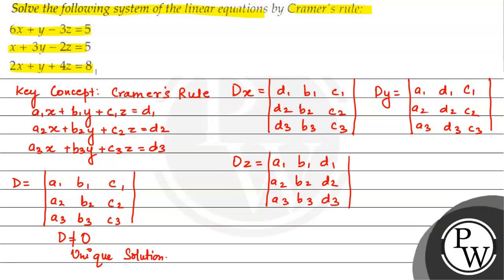Now we calculate all these determinants, and then we find x, y, and z: x is equal to Dx upon D, y is equal to Dy upon D, and z is equal to Dz upon D. That's it.